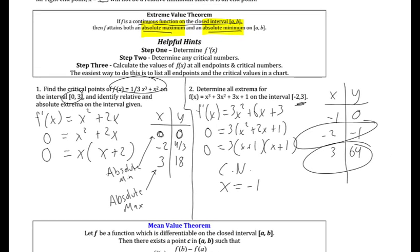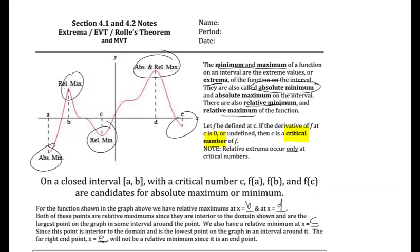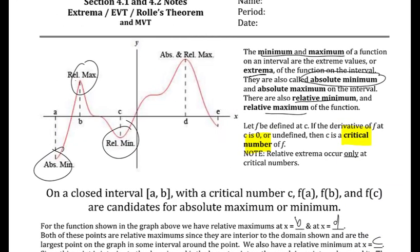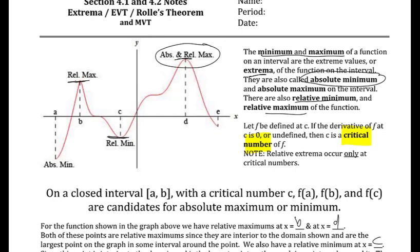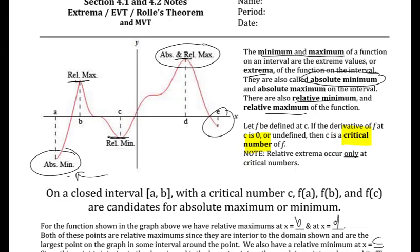If you study the graph, it makes sense. You can see it's possible for a relative max to be an absolute max, but just because it's a critical number doesn't mean it's the smallest value — you still have to test the endpoints. Here is an endpoint that shows a value smaller than where one of the critical numbers was.